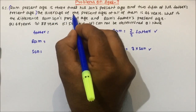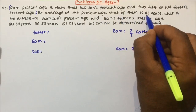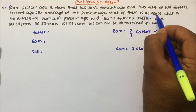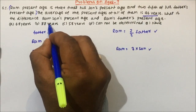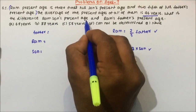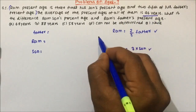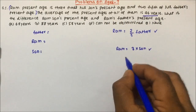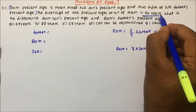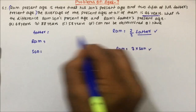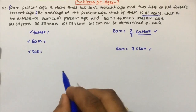Now let's read the next line. The average of the present ages of all of them is 46 years. Average is also given as 46 years. What is the difference between Ram's son's present age and Ram's father's present age? There is no number given in the question except the average age, so father's present age, Ram's present age and son's present age are not given.